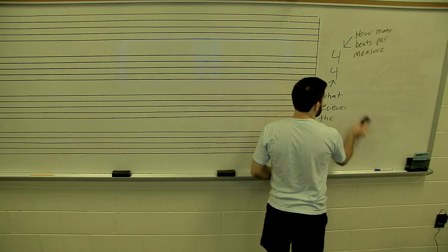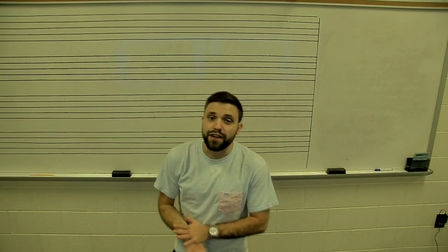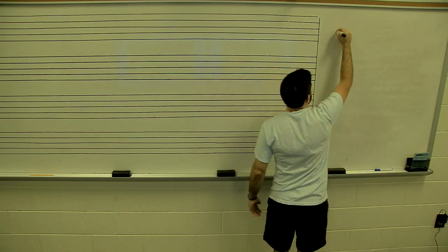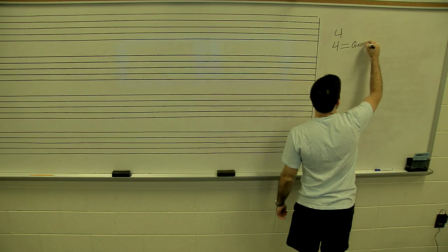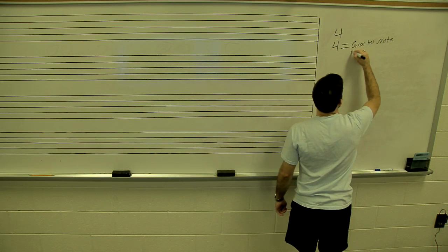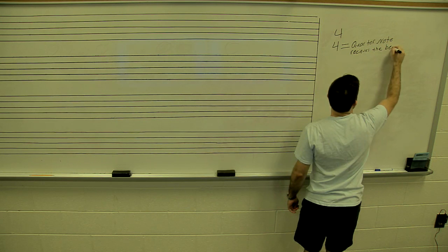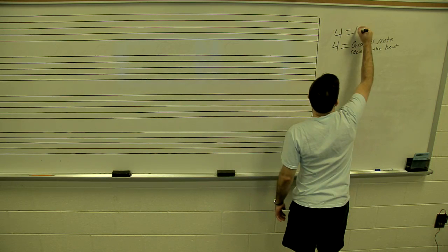Let's take a look at the different bottom number values. I'm going to use the same top number throughout all of these examples. In 4/4, the bottom number 4 tells us that the quarter note receives the beat.